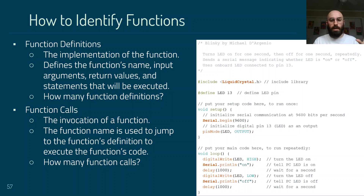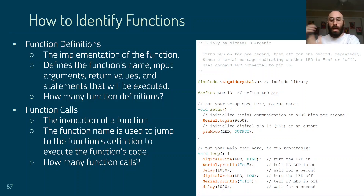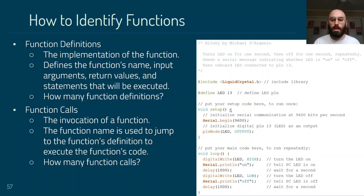To identify functions: the main signifier is a name followed by parentheses. Counting in our program: we are calling eight functions total. Defining functions looks different — it has 'void' in front of the name, then parentheses, then a curly bracket with all the lines of code inside, and a closing curly bracket at the end. In our program we're defining two functions: setup and loop. Later we'll talk about defining additional functions beyond those two.